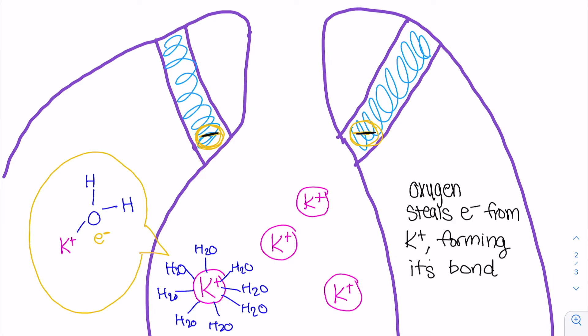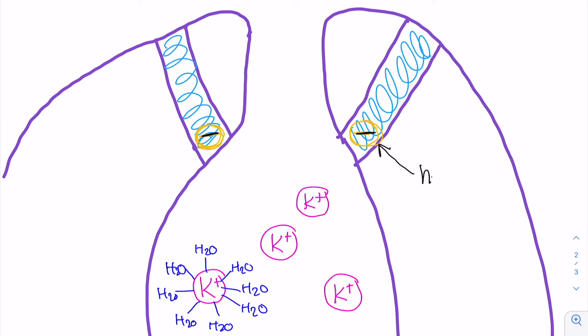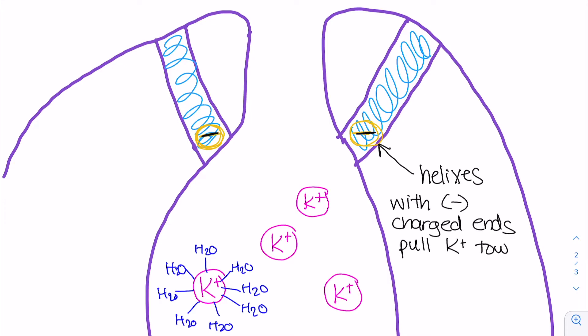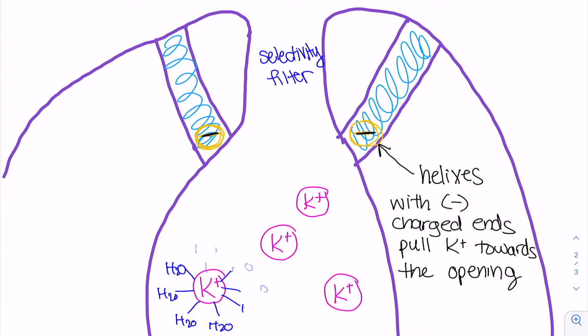In the channel, the negatively charged ends of the helices pull the potassium ion closer to the selectivity filter's opening.